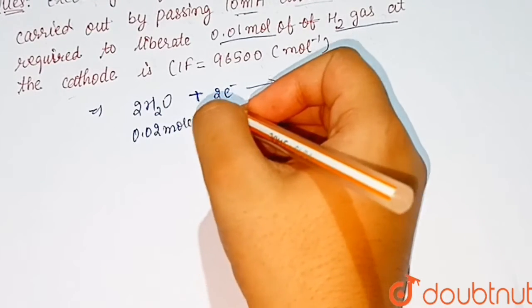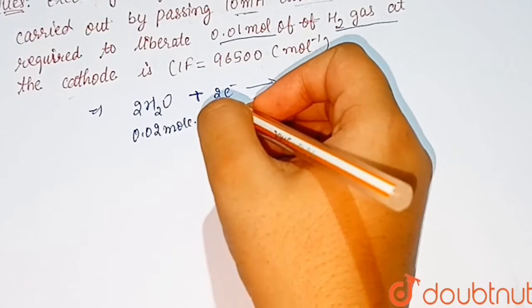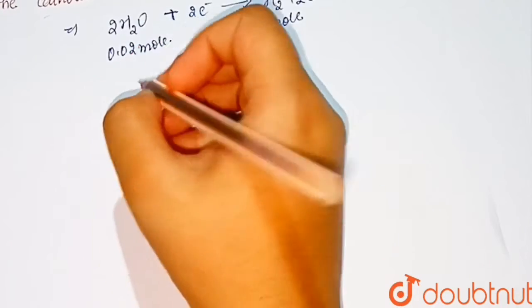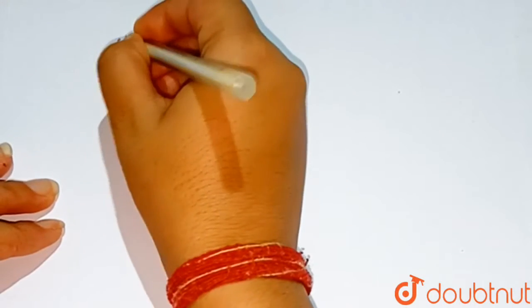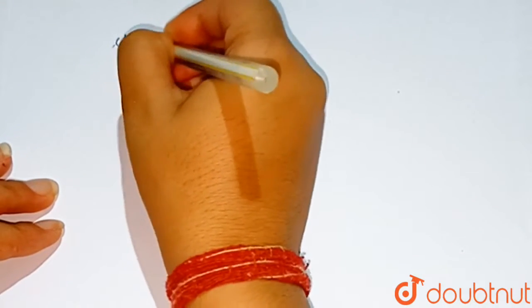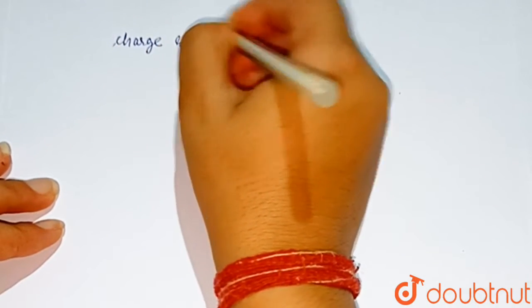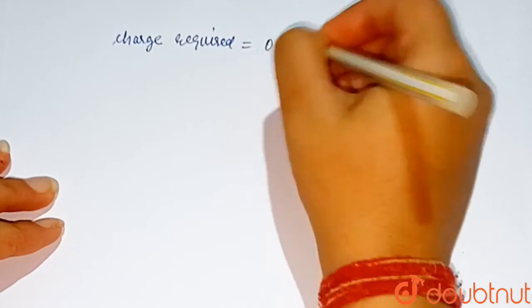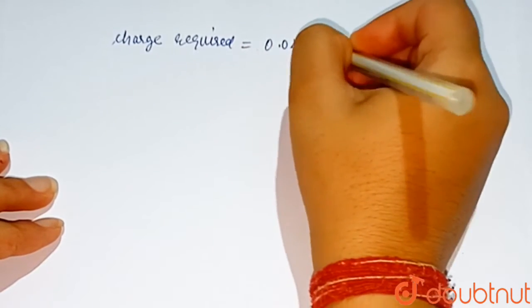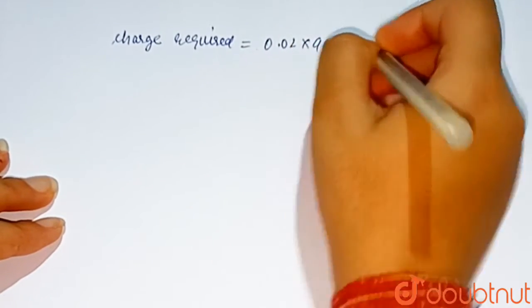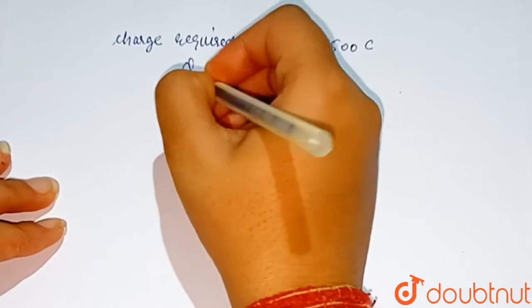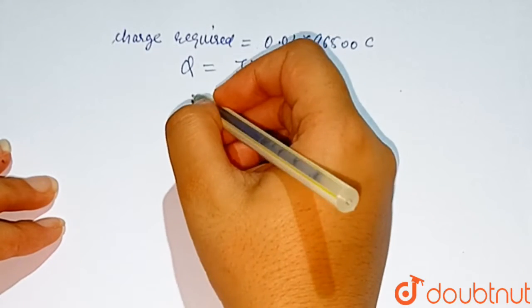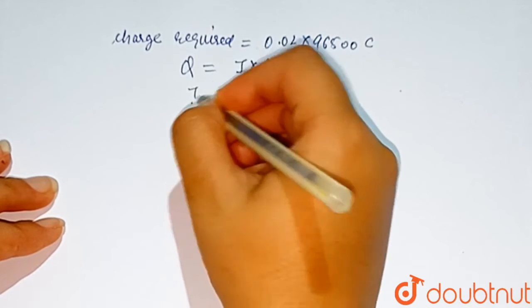0.02 mole of electrons are consumed. As we know, the charge required is equal to 0.02 into 96500 coulombs. As we know that Q equals I into t.